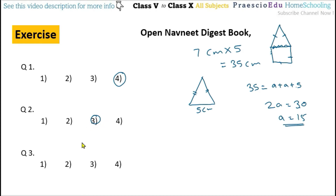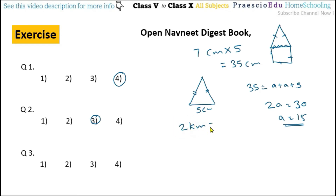Question number 3: Bhushan runs for practice daily 5 times around a square garden and completes 2 km. What is the length of one side of the ground? 2 km is equal to 2000 meters.